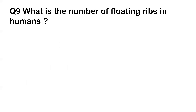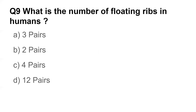Question number nine: What is the number of floating ribs in humans? Options are three pairs, two pairs, four pairs, and twelve pairs. The answer is two pairs. There are twelve pairs of ribs in the human body, but the eleventh and twelfth pairs are floating ribs.